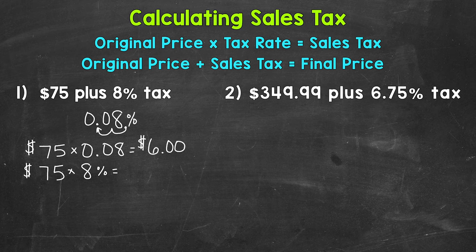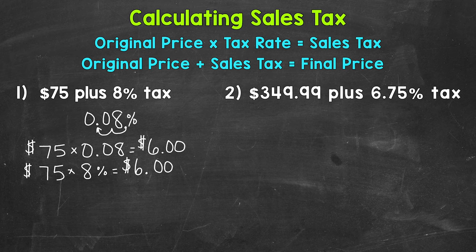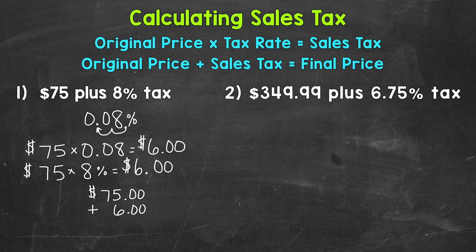75 times 0.08, or $75 times 8%, gives us $6. That's how much we are going to pay in tax. Once we have that, we take our original price and add that sales tax to get our final price. So $75 plus $6 gives us a total price, with tax included, of $81.